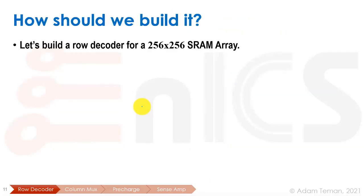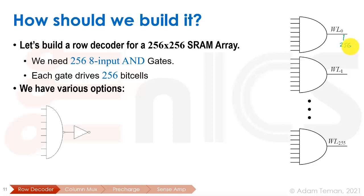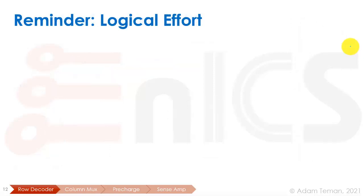Let's say we want to build an SRAM array with an 8-bit address — 256 rows — and 256 columns. We need 256 eight-input AND gates, and each gate needs to drive 256 bit cells, which is a pretty big fan-out. We have various options: a single 8-input NAND gate followed by a CMOS inverter; two stages with two 4-input NAND gates followed by a NOR; or more stages such as four 2-input NAND gates, followed by two 2-input NOR gates, a 2-input NAND gate, and finally another inverter. Which is the best option?